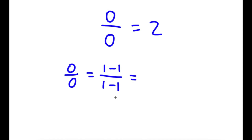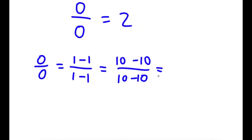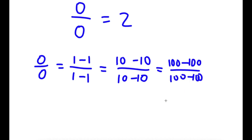Now 1 minus 1 over 1 minus 1 is the same thing as 10 minus 10 over 10 minus 10. Again, 10 minus 10 is 0, so I have 0 over 0 again. Now 10 minus 10 over 10 minus 10 is the same thing as 100 minus 100 over 100 minus 100. Again, 100 minus 100 is 0, so it's the same thing.